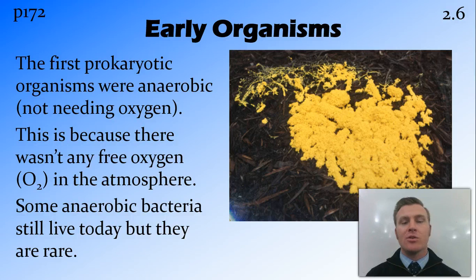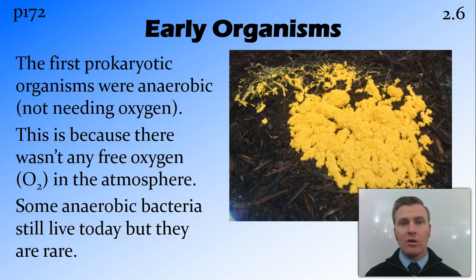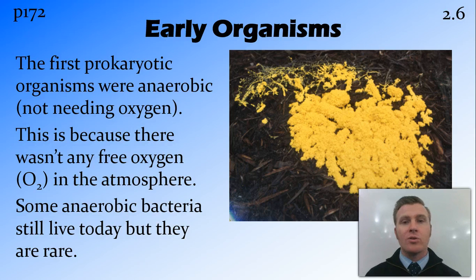These first organisms were prokaryotic — single cells without a nuclear membrane or membrane-bound organelles — and they were anaerobic, meaning they didn't need any oxygen. This is important because there wasn't any oxygen for them to actually use. When we talk about oxygen in the atmosphere, we're talking about free oxygen. Oxygen is a diatomic element, meaning there are two atoms, so O2 is what we're talking about when we refer to free oxygen or oxygen in the atmosphere.